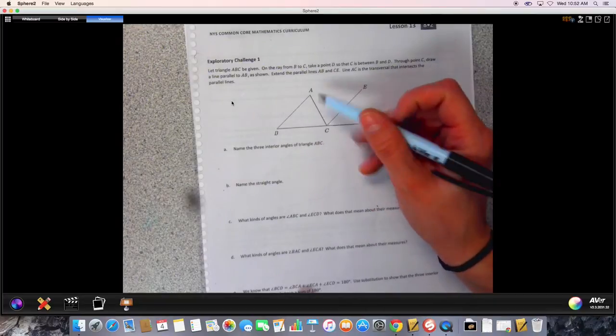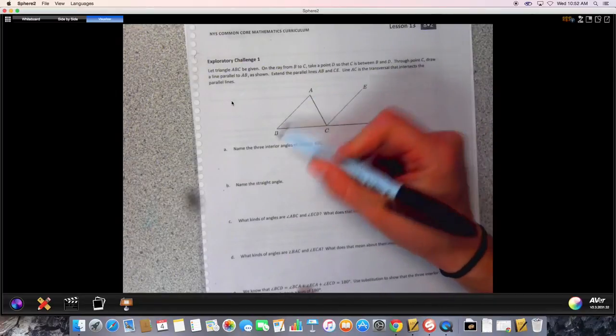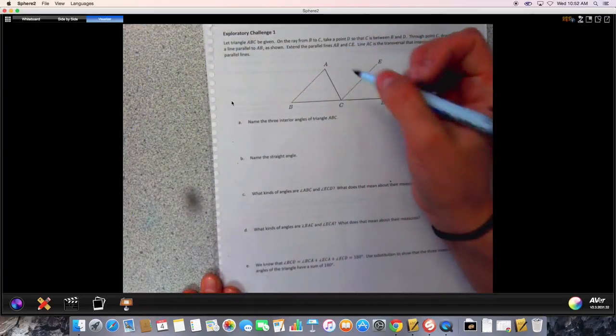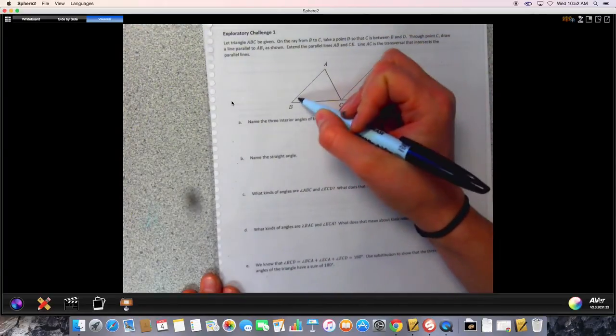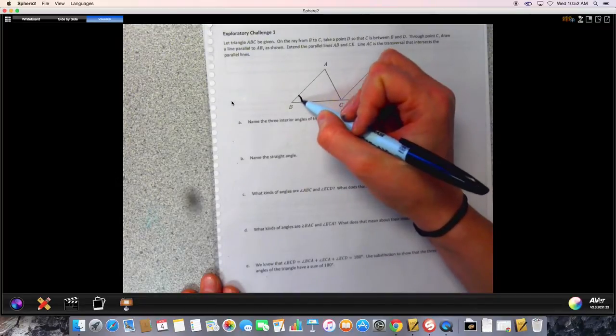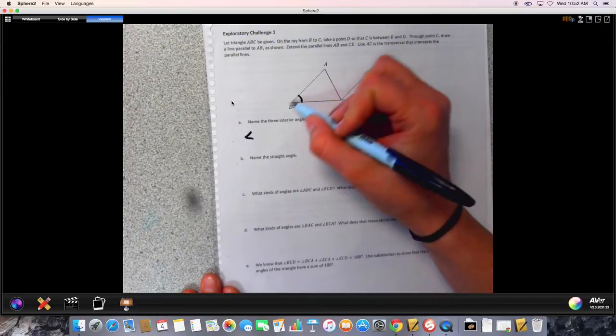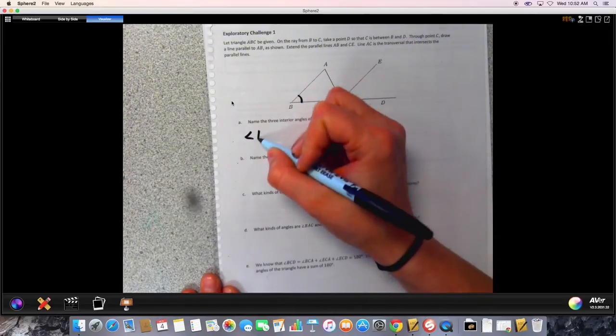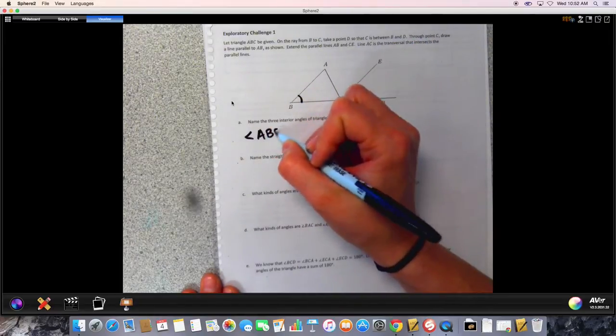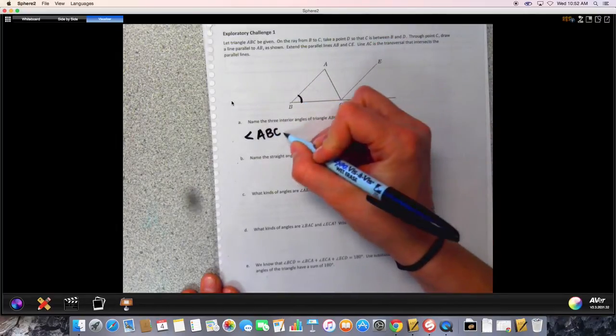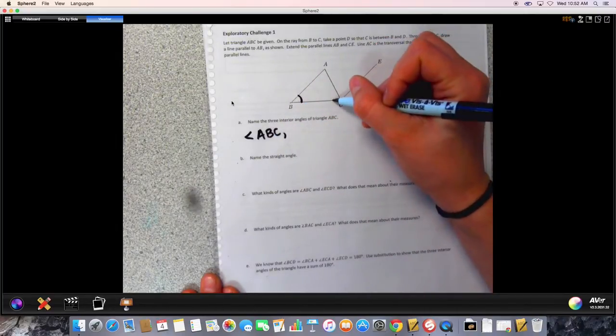ABC is this triangle right here. The way we name an angle is like this: if we're looking for this angle right here, we say angle ABC with the angle we're looking for in the middle, so B is the letter in the middle.